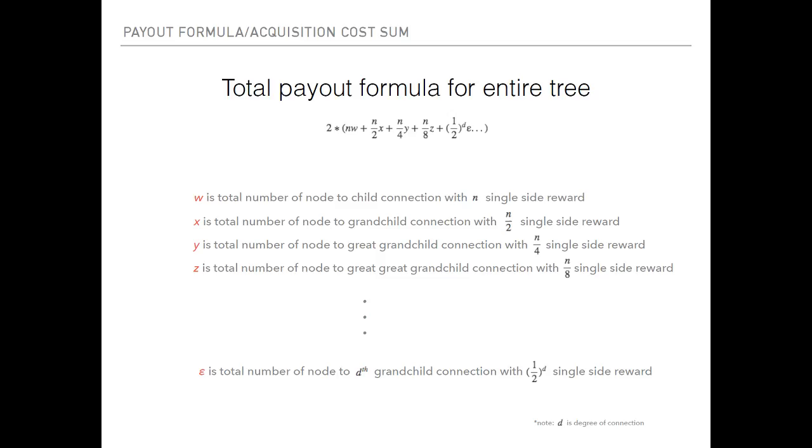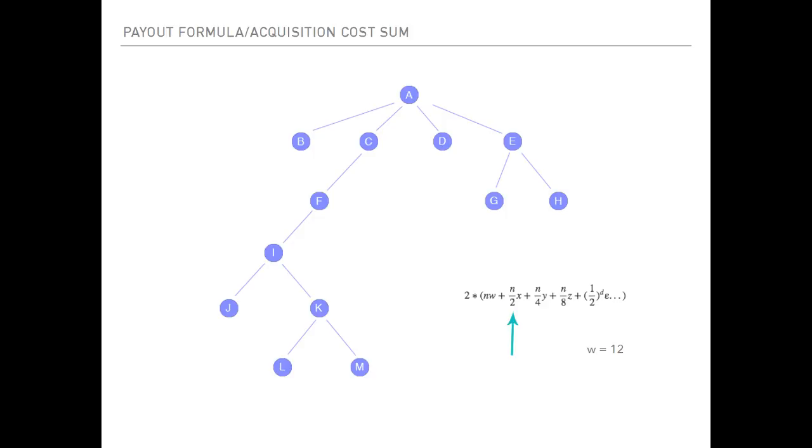So you got 12 edges, and that's where your W is. Since each of them are the first degree of connection, they're all rewarded with N. Afterwards, you count the X, which is the total number of node-to-grandchild connection with N over 2 single side reward. Node-to-grandchild connection is basically each edge connected with another edge.